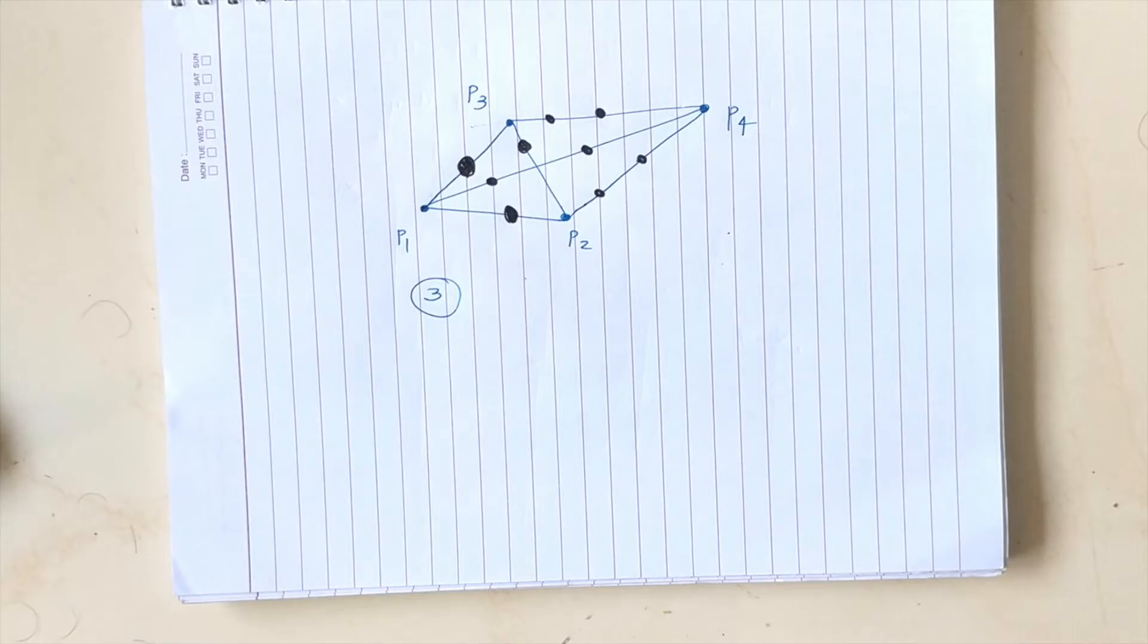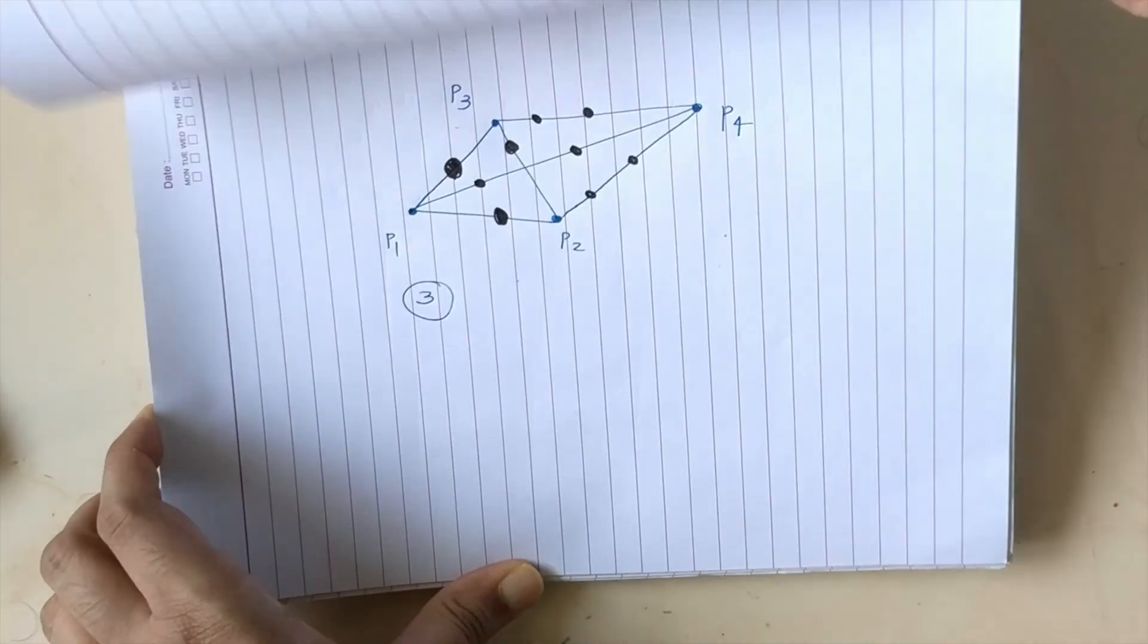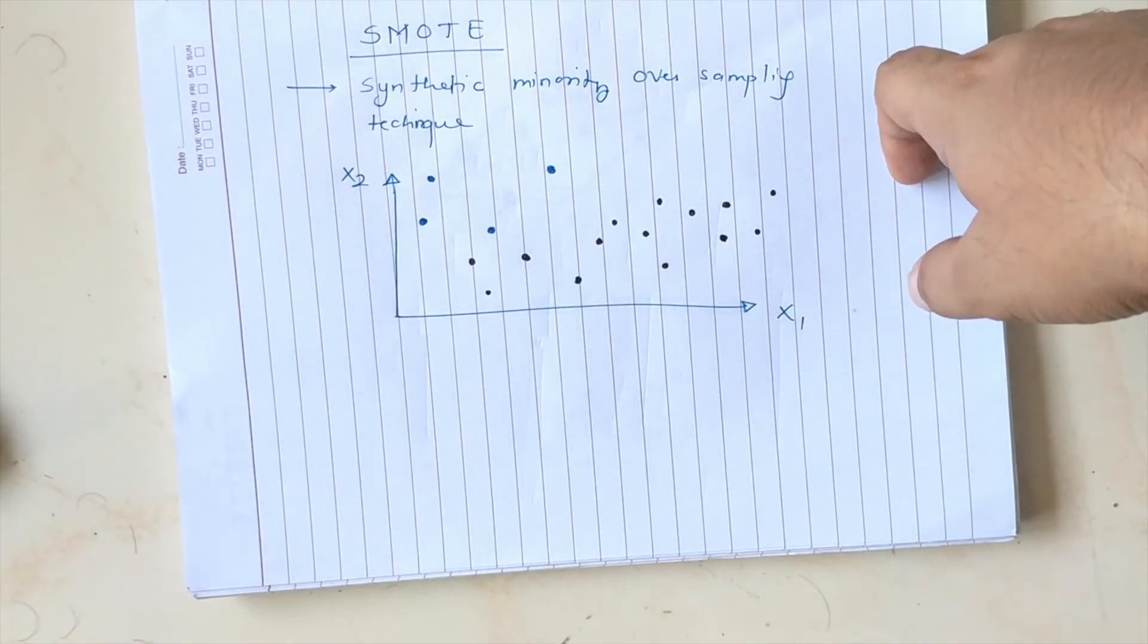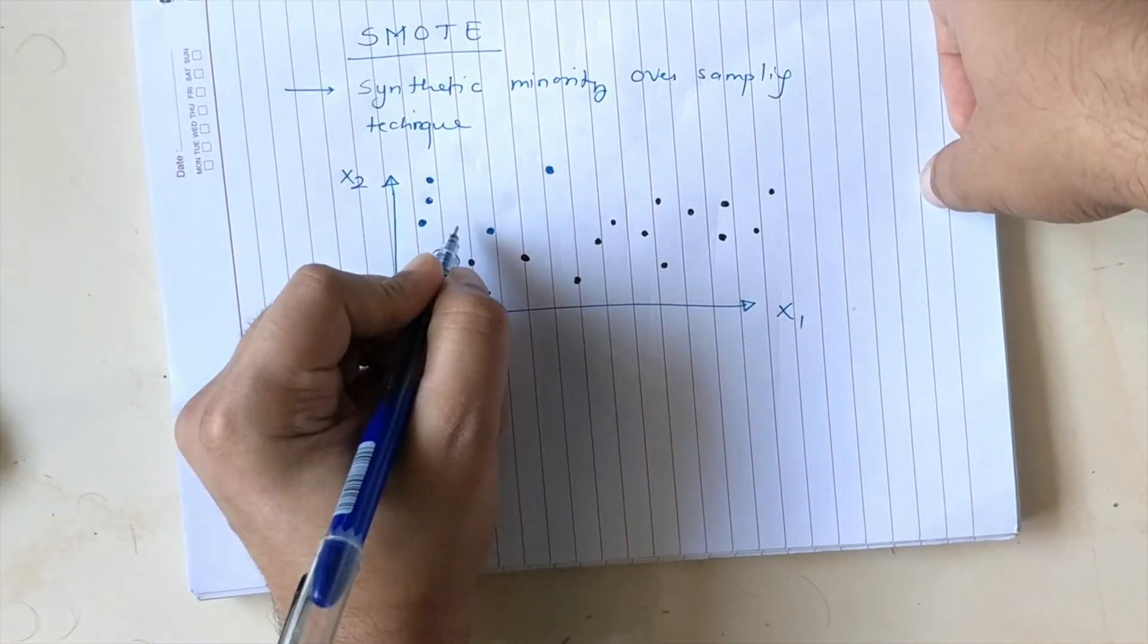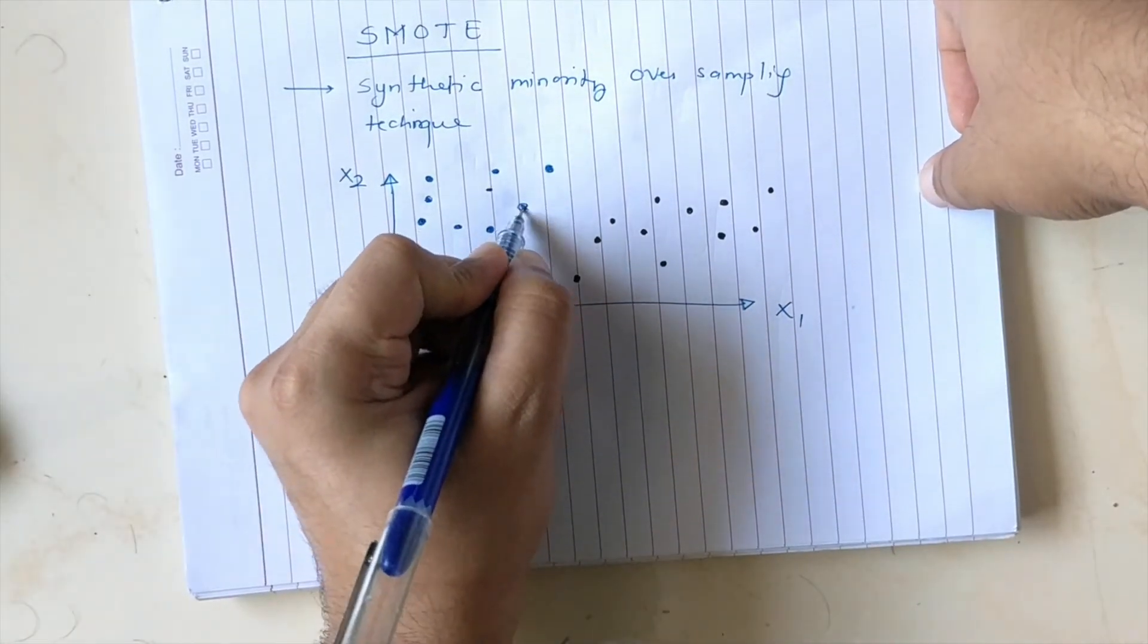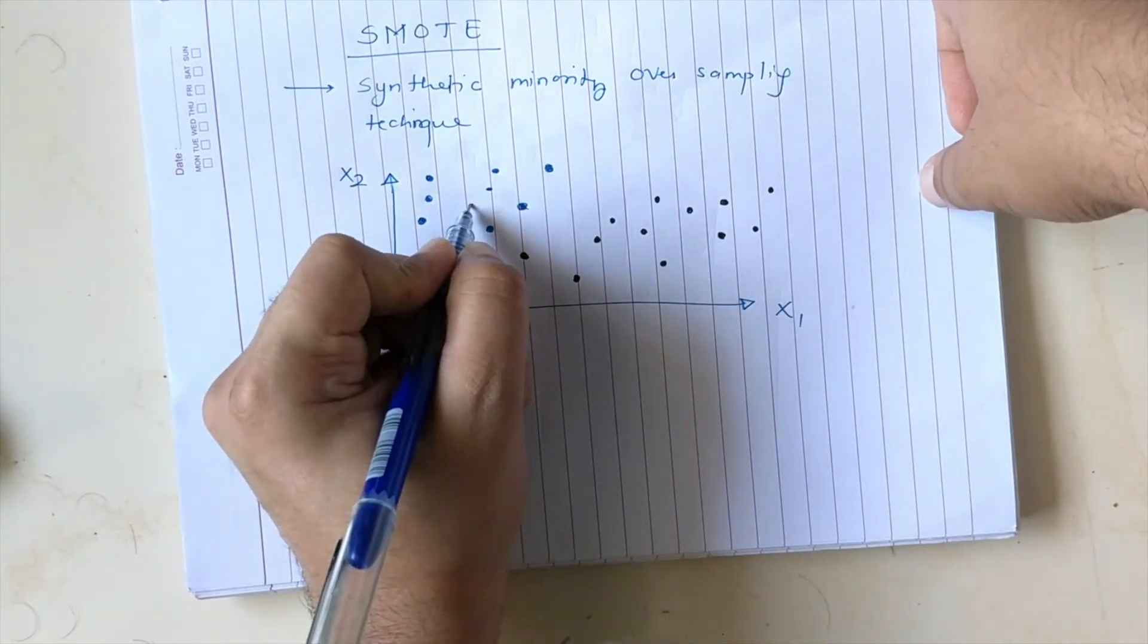After synthesizing the new minority instances, the imbalance that existed in our dataset would go down considerably. Now if you go back to the same diagram that we had, we created good amount of samples again using SMOTE. So one was here, one was here, one was here, I had a sample here, I had a sample here, and I had a sample here again.